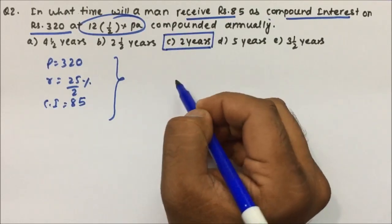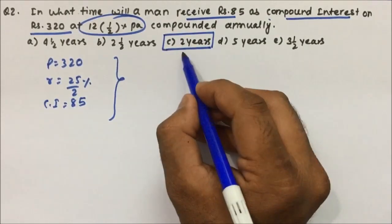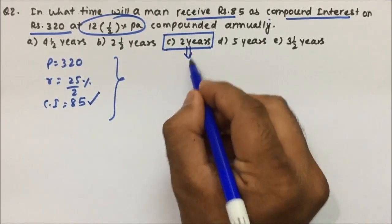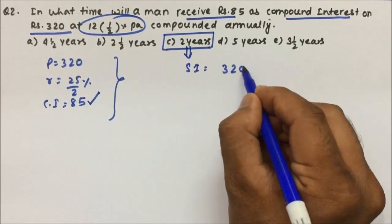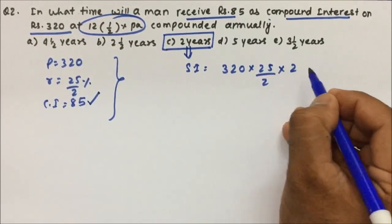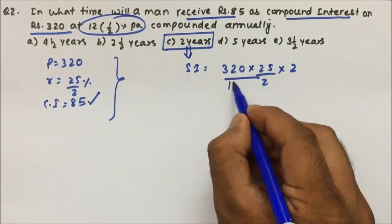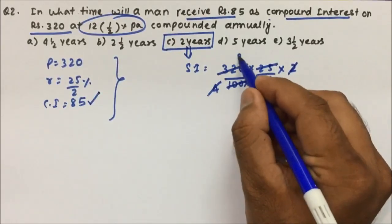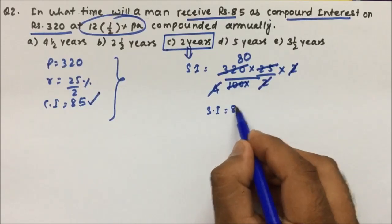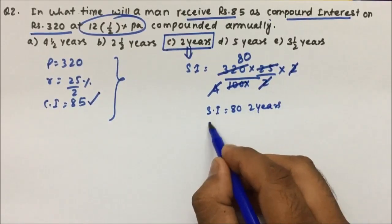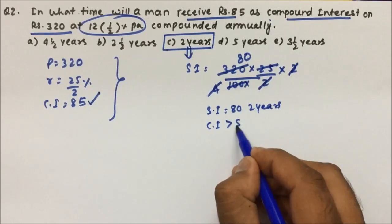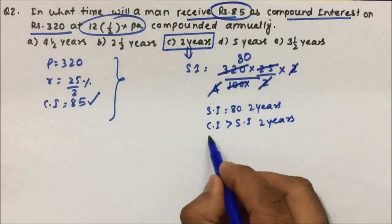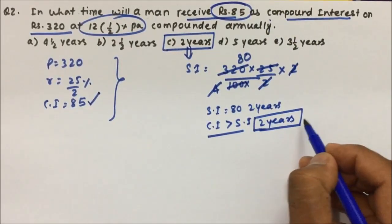If 2 years is the answer, then in 2 years he should be able to get 85 rupees. Simple interest = P × R × T ÷ 100 = 320 × (25/2) × 2 ÷ 100. The two's cancel, and simplifying gives simple interest = 80 rupees. Since compound interest is always a little more than simple interest for 2 years, and the compound interest he is receiving is 85 rupees, they will definitely be investing for 2 years.